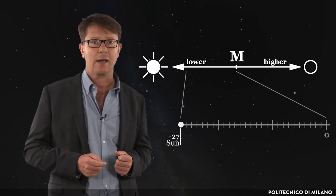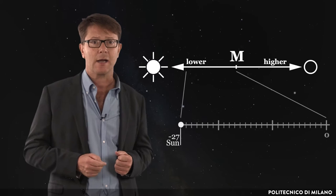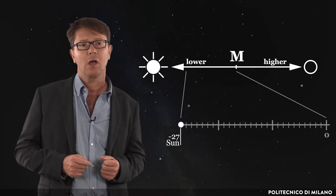Clearly, the Sun has the lowest possible magnitude, about minus 27. After the Sun, there are the Moon and Venus. The brightest star Sirius has a magnitude of minus 1.46.